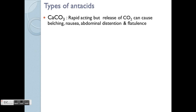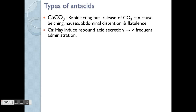The first type of antacid is calcium carbonate. It's less commonly used now, but still available. It's rapidly acting, but the carbonate component causes release of carbon dioxide gas. When trapped in the GI tract, this causes belching, flatulence, nausea, and abdominal distension. Additionally, calcium may induce rebound acid secretion — when the effect wears off after two to three hours, it can trigger the stomach to secrete more HCl, causing another bout of symptoms and requiring more frequent administration.